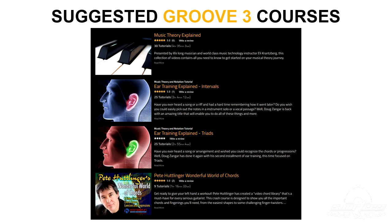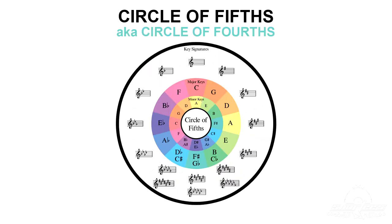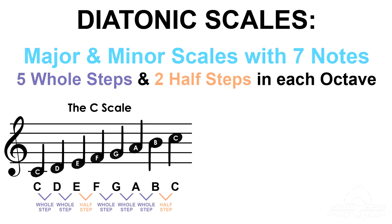To understand the keys and the circle of fifths, it really helps to learn a little bit about scales first. A scale is a set of musical notes that are grouped together by frequency or pitch. The circle of fifths, also known as the circle of fourths, represents the relationship between diatonic scales. Diatonic is just a fancy word to describe the major scales or the natural minor scales that consist of seven notes. These seven notes include five whole steps and two half steps in each octave.